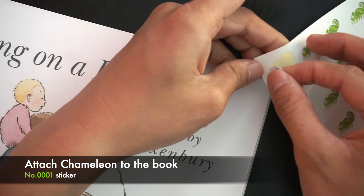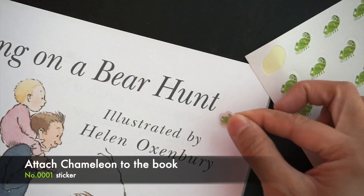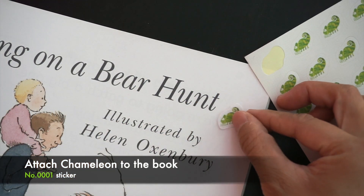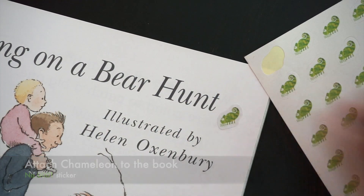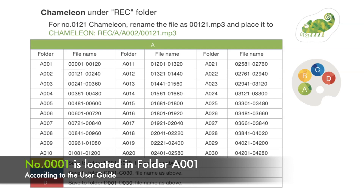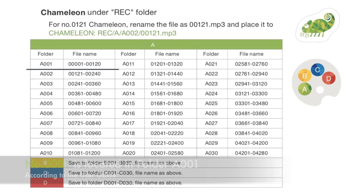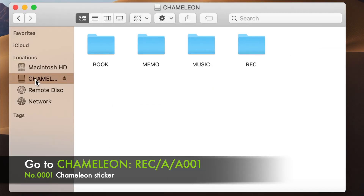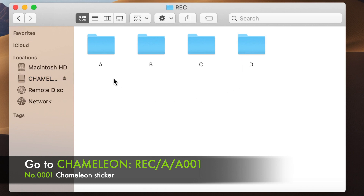Attach the Chameleon sticker to the book. Number 0001 is located in folder A001 according to the table in the user guide. Go to Chameleon > REC > A > A001.